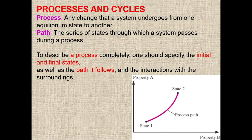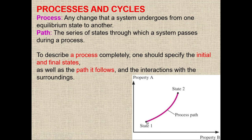In this figure, you can see we have state number one and state number two. This is the path. The path can be different — if I have to move from state one to state two, I can go via different routes. Whatever path you follow, the result will be different. We need a process to change a system from one state to another state.